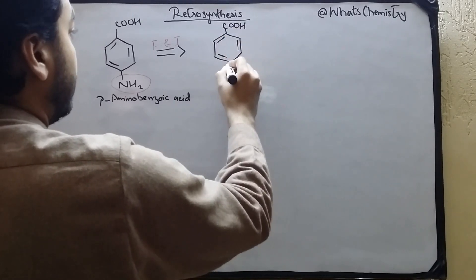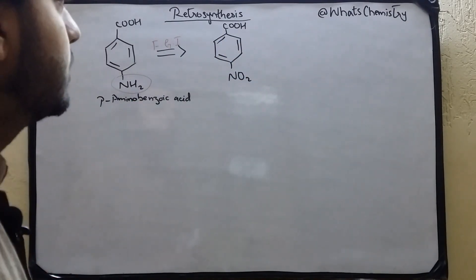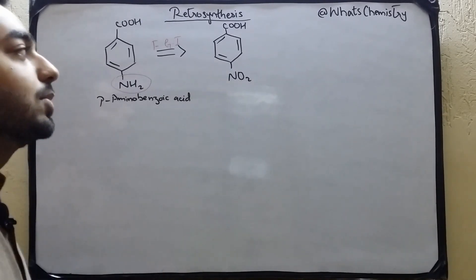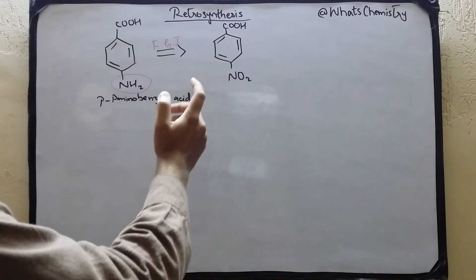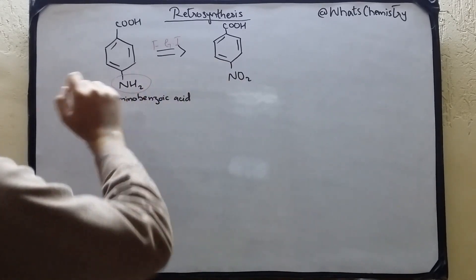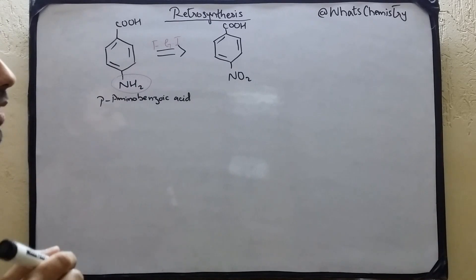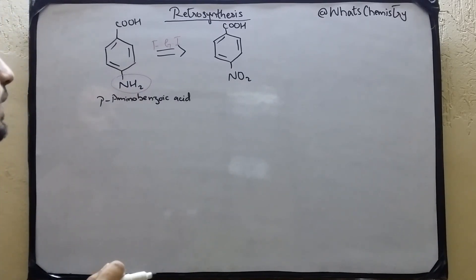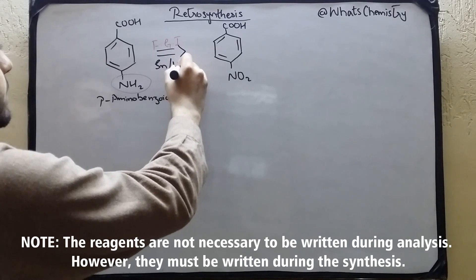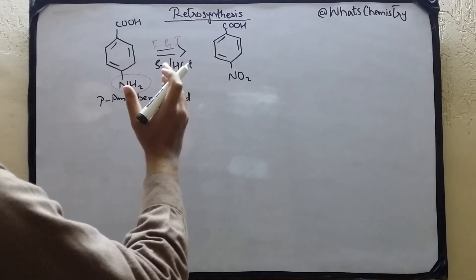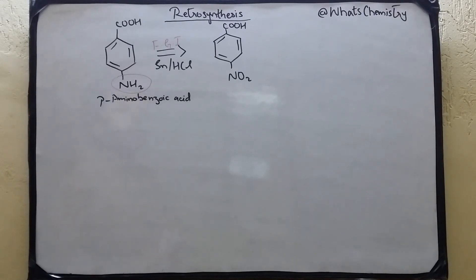So we write COOH and NO2 — here is our para-nitrobenzoic acid, or four-nitrobenzoic acid. The question is: how can we convert this nitro group into an amino group? We can do this by reduction — we add tin (Sn) and HCl. This completes our first step of retrosynthesis.